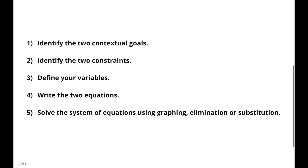That's a lot of information, but that's okay. I've got five steps that are going to help you walk through how to sort through all this information. First, we're going to identify the two contextual goals. Then we're going to identify the two constraints, define your variables, write the two equations, and finally solve the system of equations using either graphing, elimination, or substitution. So let's start by identifying the two contextual goals.